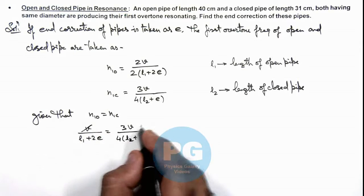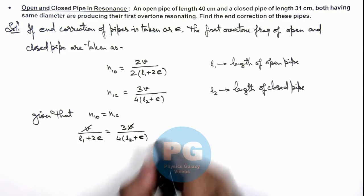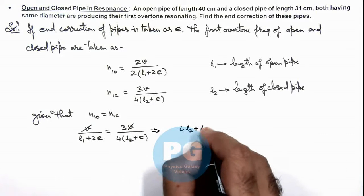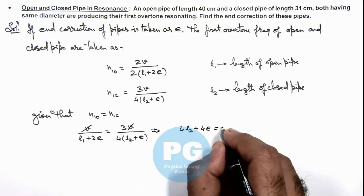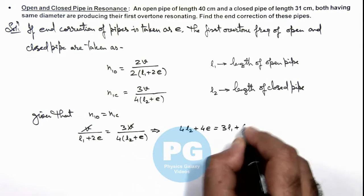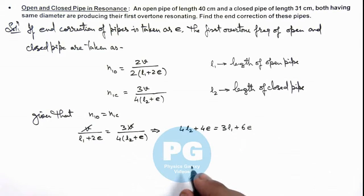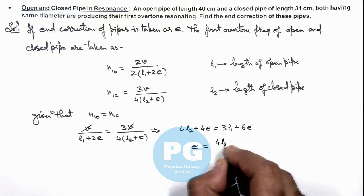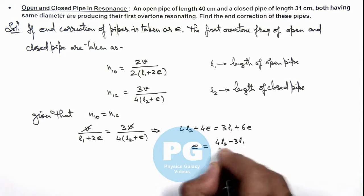v gets cancelled out, and on simplifying this we get 4L2 plus 4e is equal to 3L1 plus 6e. On simplifying this value we get the value of end correction as (4L2 minus 3L1) by 2.